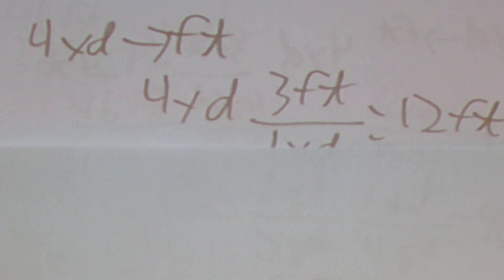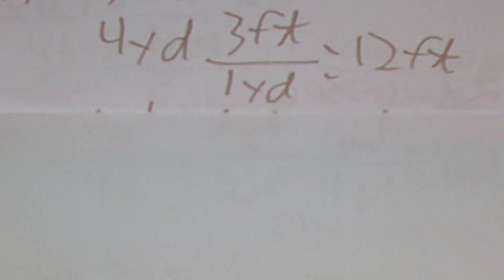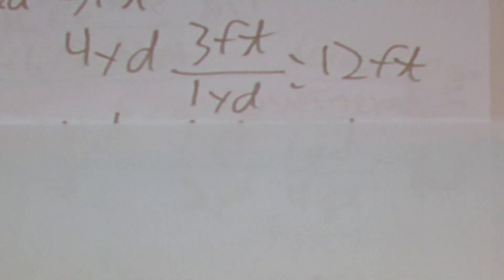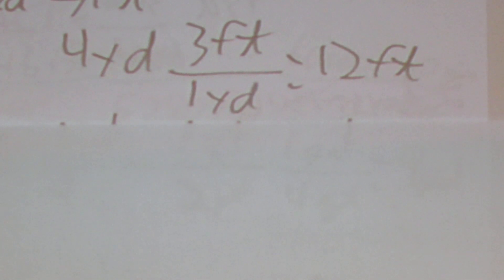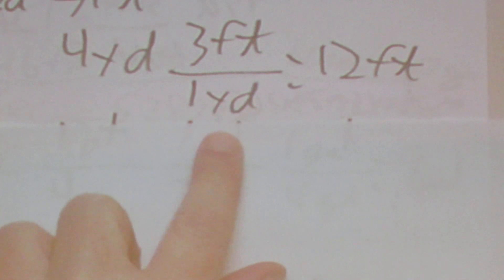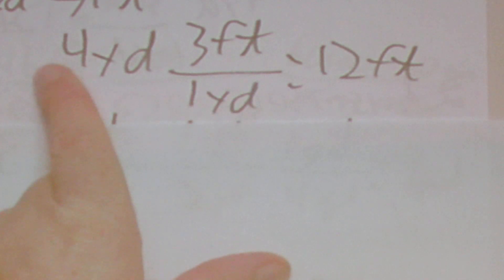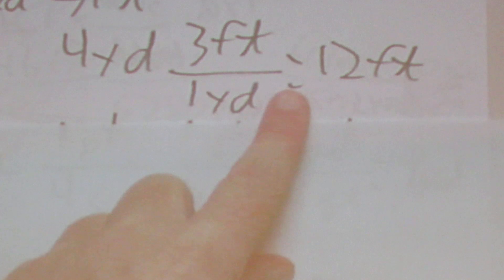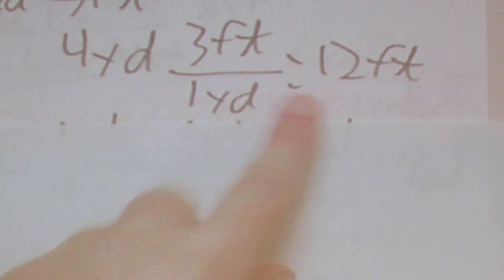Let's say you start with 4 yards and you need to go to feet. You'll set it up as 4 yards times 3 feet over 1 yard. The yards will cancel, so you have 4 times 3 equals 12 feet.